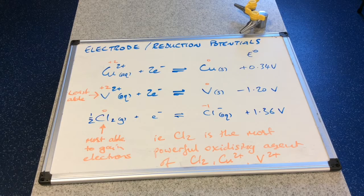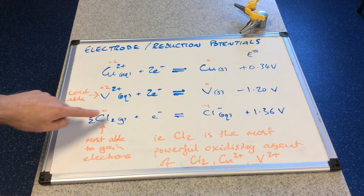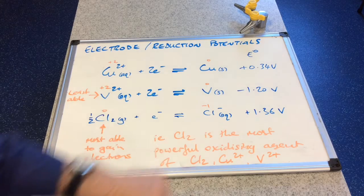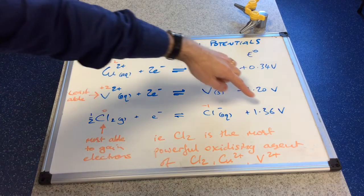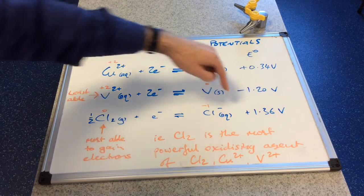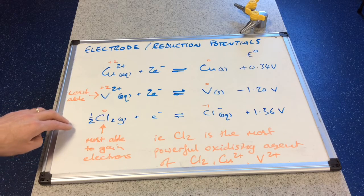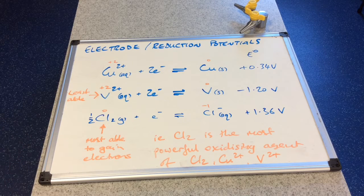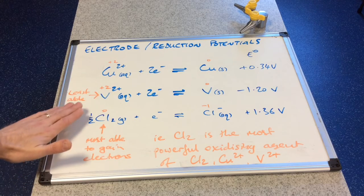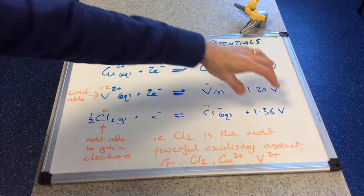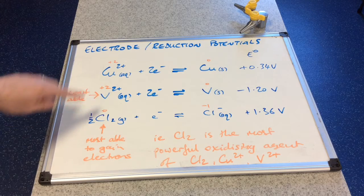Now before we go any further you might notice that I've changed this half equation ever so slightly. Instead of having Cl2 gaining two electrons in equilibrium with two Cl minuses, I've just balanced it differently. And you'll notice that the electrical potential hasn't changed. And that's because just because we've balanced it differently, that doesn't mean that it's going to change or affect the ability for this particle to gain electrons. So it doesn't matter how you balance these. The standard electrical potential never changes. And that's going to come in really important when we start combining two half equations.